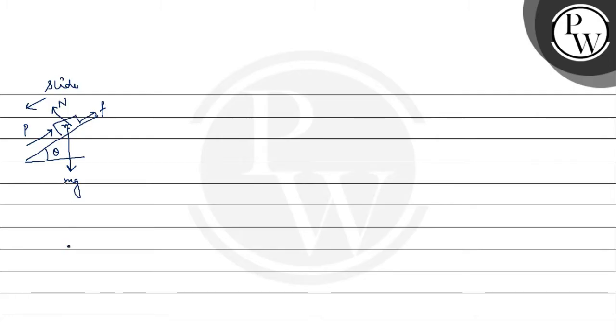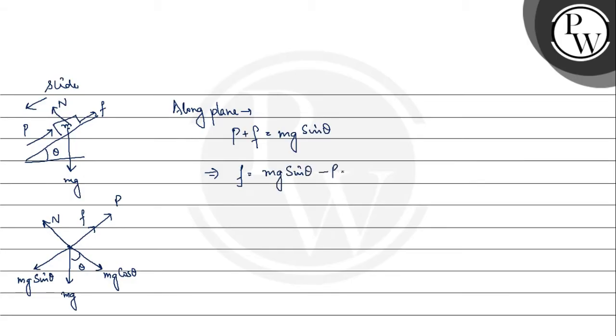If we create a free body diagram, we will have a normal component first, and then we have P in this direction. Then we have the frictional force also in this direction, and we will have Mg on the left. Then we will try to resolve this component. This will have a theta angle. This will be the horizontal component, which is Mg cos theta, and another will be the vertical component, which will be Mg times sine theta. So if along the plane equation, then we have P plus F is equal to Mg sine theta.